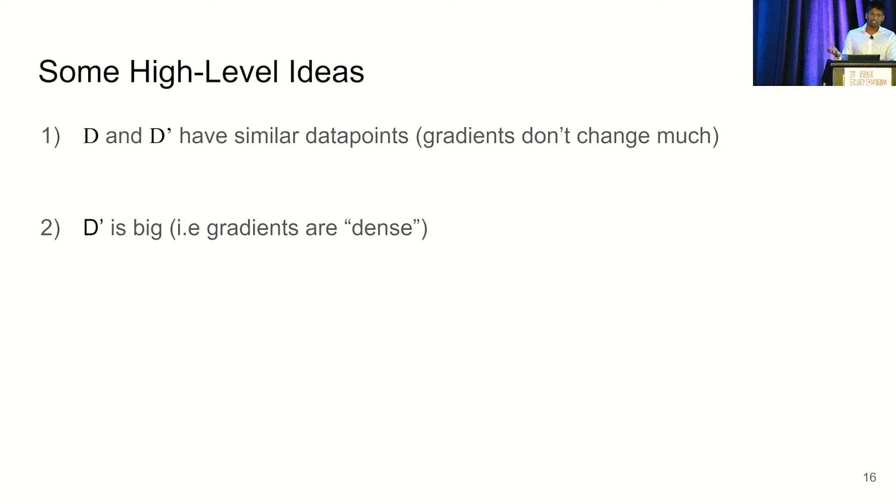So the question is, when could forging exist? And some high-level ideas you might have is that maybe D and D prime just have similar data points, which is that for every data point in D, I have a data point in D prime that's similar enough that it produces similar gradients. Or you might think, what if D prime was just very big? And it kind of produces any gradient I would ever want. So some sort of density argument.